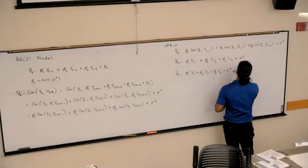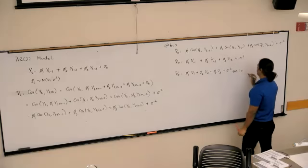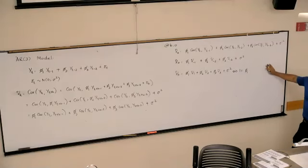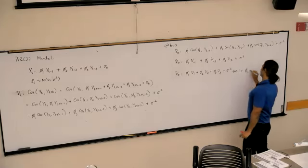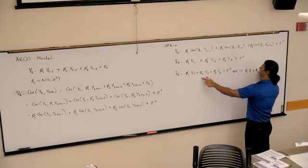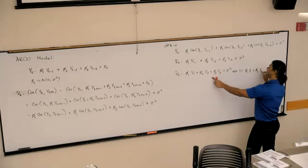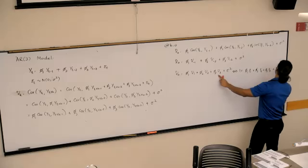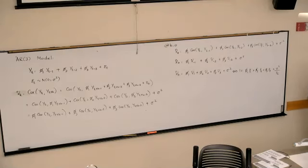If I divide by gamma nought on both sides, I'll have 1 equals phi 1 gamma 1 over gamma nought. What is gamma 1 over gamma nought? It's rho 1. Likewise gamma 2 over gamma nought would be rho 2, gamma 3 over gamma nought is rho 3 plus sigma squared over gamma nought.